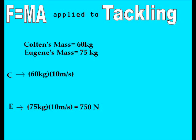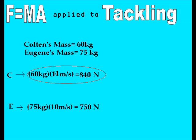Here we give them both equal accelerations of 10 meters per second. Eugene still has the 750 Newton force we found earlier, but this gives Colton a force of only 600 Newtons — 150 less than Eugene — thus Eugene winning over Colton. If we raise Colton's acceleration above 12.5 to, say, 14 meters per second, Colton would have a higher force than Eugene: 840 Newtons versus Eugene's 750 Newtons, this time Colton winning over Eugene.